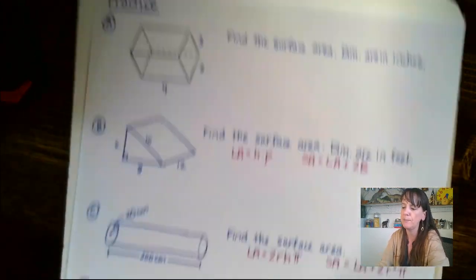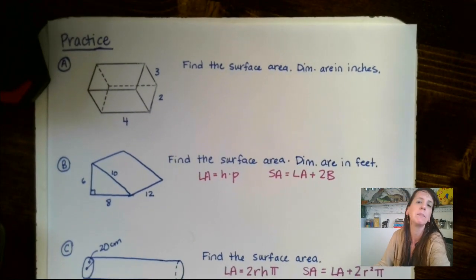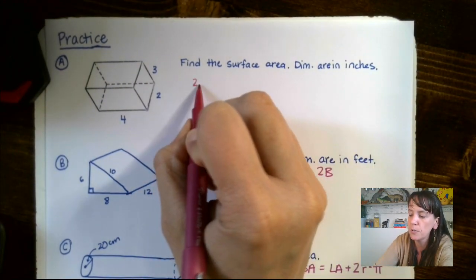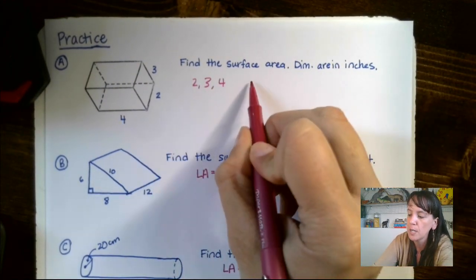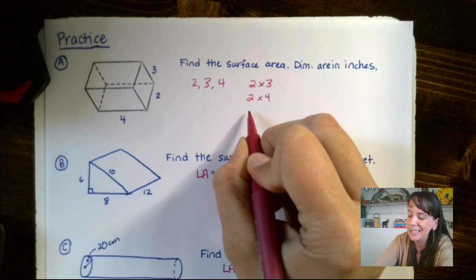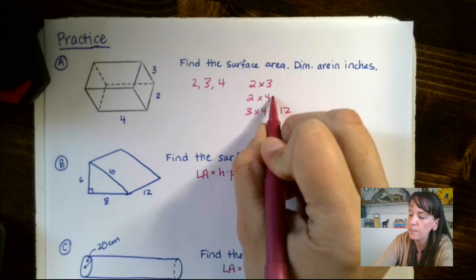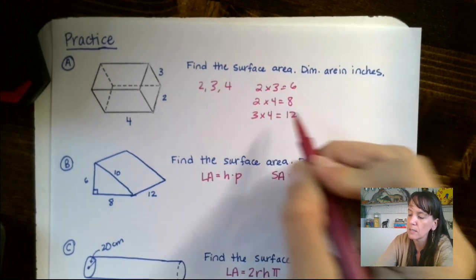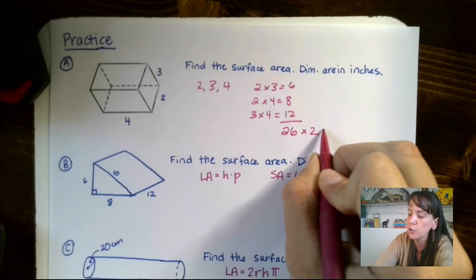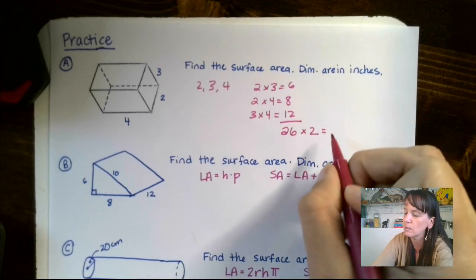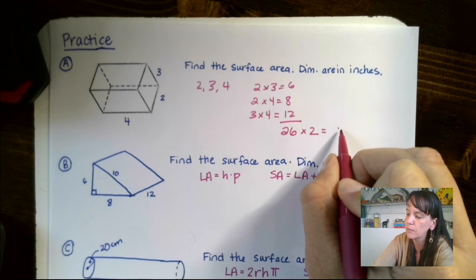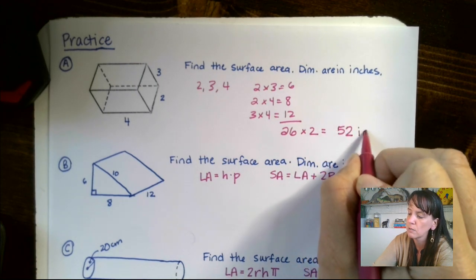Okay, let's look at number one — find the surface area. Dimensions are in inches. We've got 2, 3, and 4. So we do 2 times 3, 2 times 4, and 3 times 4, giving us 6, 8, and 12. Those add up to 26. Multiply by 2, and we get 52 inches squared.